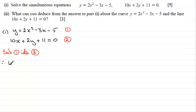So we therefore have 10x, okay, plus 2 times y, so we'll put 2 bracket and then we'll have in place of y, 2x squared minus 3x minus 5, and then we've got plus 11 equals 0.